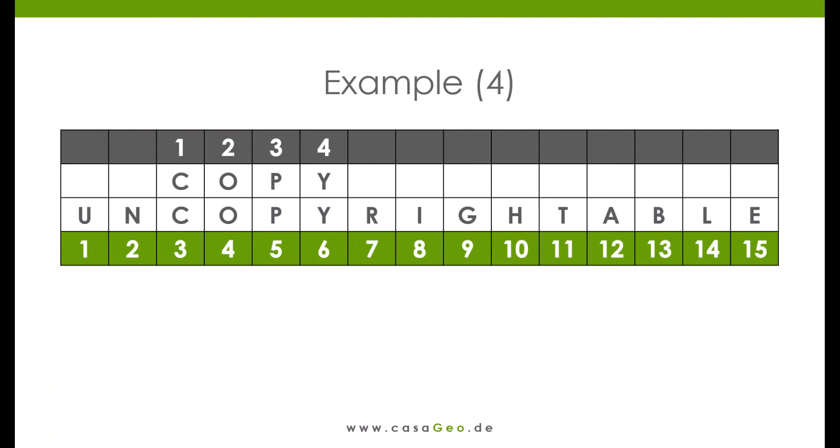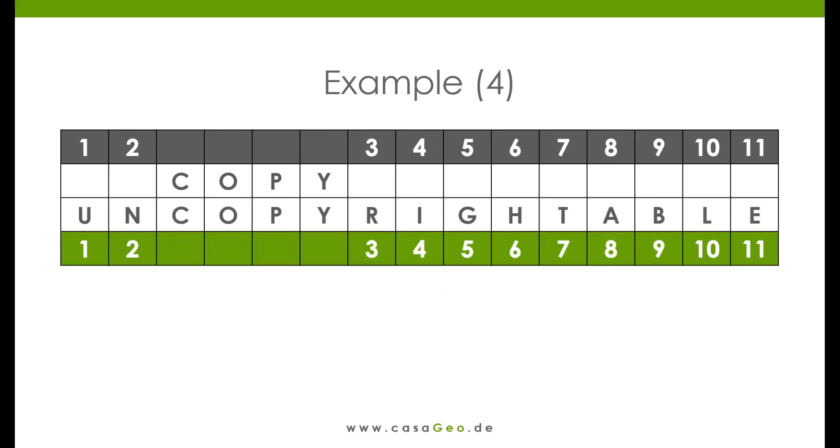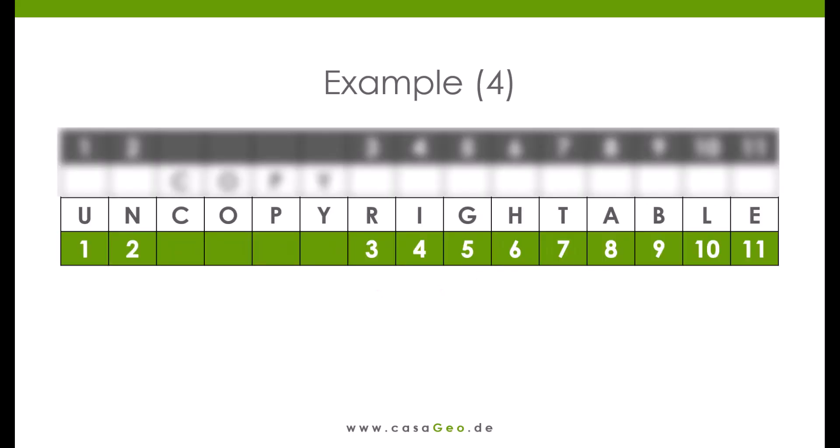Secondly, copy and uncopyrightable. The word copy is four, and the word uncopyrightable is fifteen characters long. To go from copy to uncopyrightable we have to add eleven characters, so make eleven changes. Four minus eleven gives minus seven. To go from uncopyrightable to copy, eleven characters have to be removed. The number of changes are of course always synchronous. Fifteen minus eleven equals four.